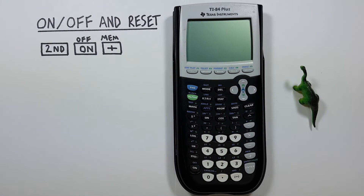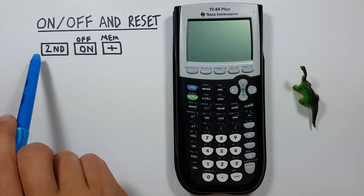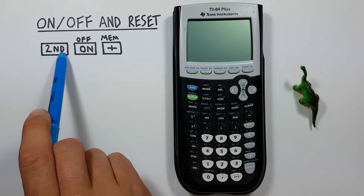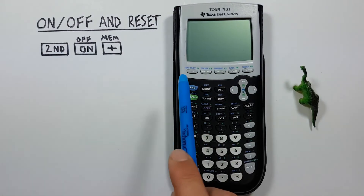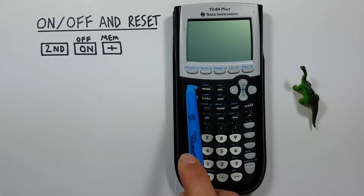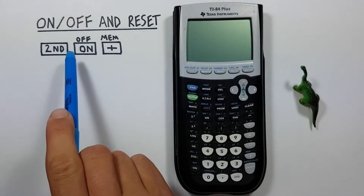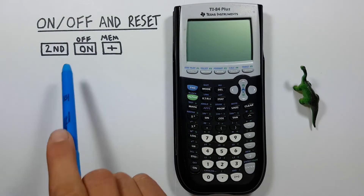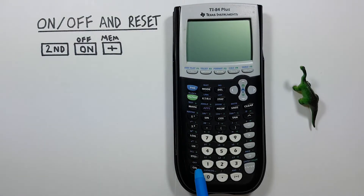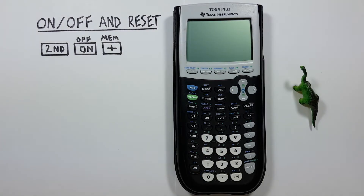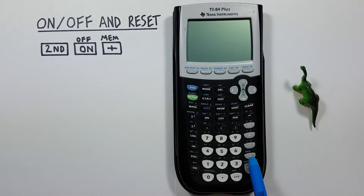To do this we'll need to use the second key that looks like this, located here, the on-off key that looks like this, located back here, and the plus key with the second function of memory that looks like this, located here.